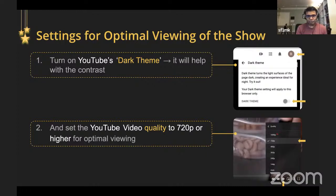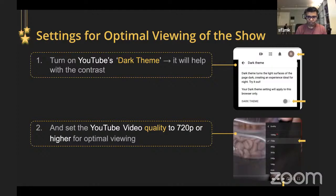Before we get started, I want to give you a couple of tips to enjoy this program better. First, try to find the dark theme in YouTube and turn it on. If you have a desktop with bright objects behind your web browser, try to turn them off or make your browser full screen, because we're going to be showing objects with a dark background. Second, go to your YouTube quality settings and try to pick 720p or higher — we'll be showing very dim objects and high quality will help you enjoy the program better.